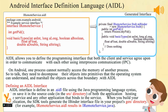Defining an AIDL interface: the AIDL interface is defined in an AIDL file using Java programming language syntax, then saved in the source code in the SRC directory of both the application hosting the service and any other application that binds to the service. When you build your application, the SDK tools generate the IBinder interface file in your project's generated directory. The generated file name matches the .aidl file name but with a .java extension — for example, IRemoteService.aidl results in IRemoteService.java.